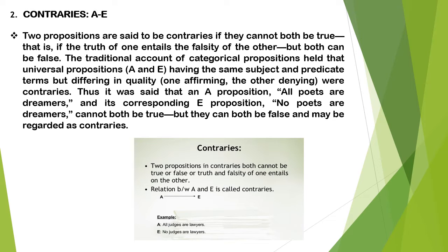A and E propositions are described as contraries. Two propositions are said to be contraries if they both cannot be true — that is, the truth of one entails the falsity of the other. Look at this example: 'All judges are lawyers' is the A proposition and 'No judges are lawyers' is the E proposition. So if you hold any one of them as true, for example if 'all judges are lawyers' is true, then 'no judges are lawyers' must be false. But both can be false together. Which means A and E propositions are contraries — both cannot be true, but both can be false.